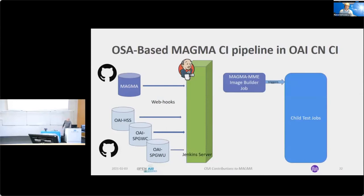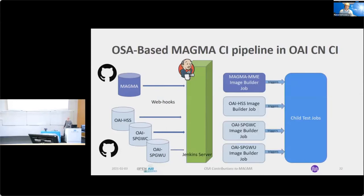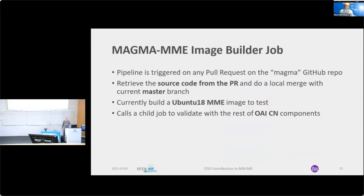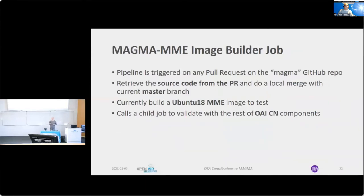The approach is the same for our own components like HSS, SPGatewayC, or SPGatewayU. For the MAGMA MME image builder job, it is triggered by a pull request on the MAGMA GitHub repository. We retrieve the source code of your pull request and do a local merge with the current master branch status, ensuring that your pull request is mergeable. Then we build an Ubuntu 18 MME image to be tested.